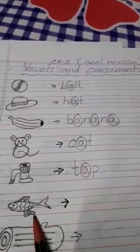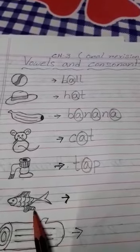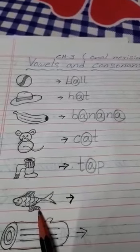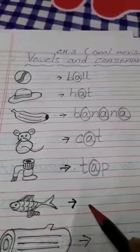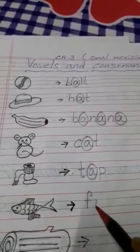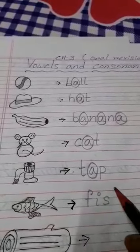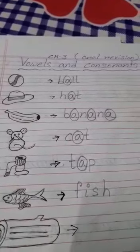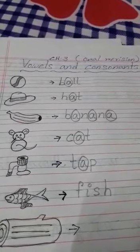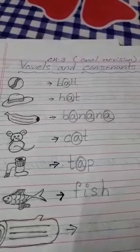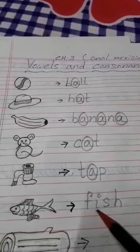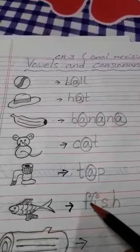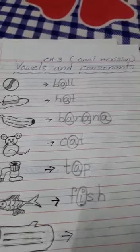Now, what picture is this? This is a fish. Tell me the spelling of fish. F-I-S-H, fish. Now, tell me which is vowel here? I is a vowel. So, what you have to do? You have to circle it.